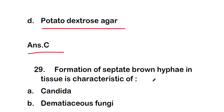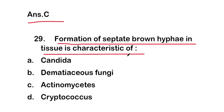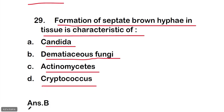Question 29: Formation of septate brown hyphae in tissue is characteristic of option A - Candida, option B - dematiaceous fungi, option C - actinomycetes, or option D - Cryptococcus. The right answer is option B, dematiaceous fungi. Formation of septate brown hyphae in tissue is characteristic of dematiaceous fungi.